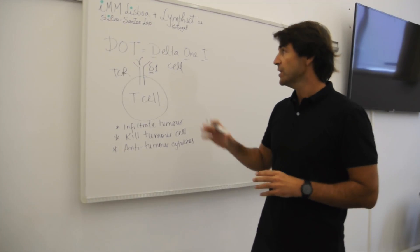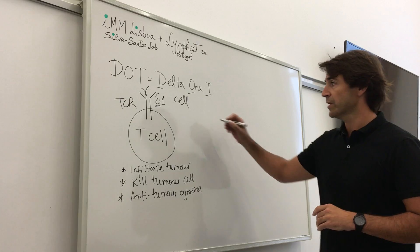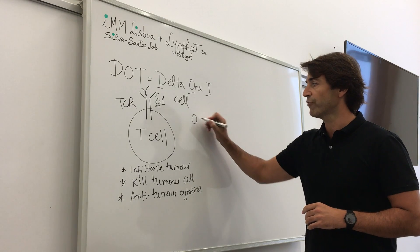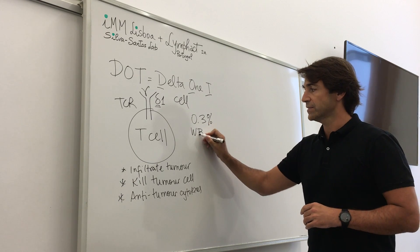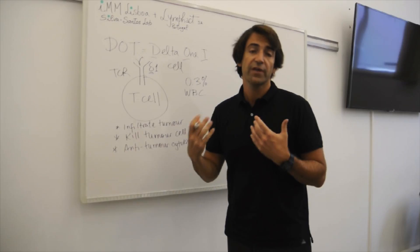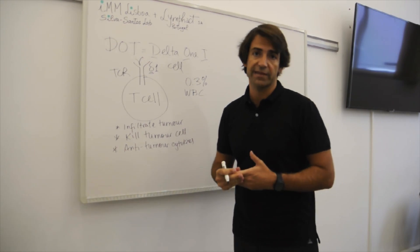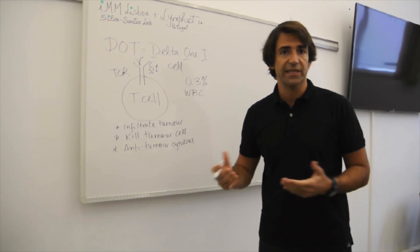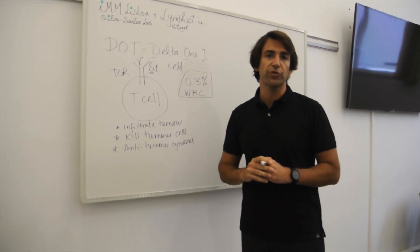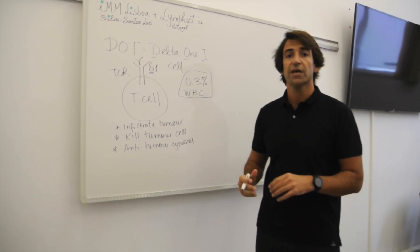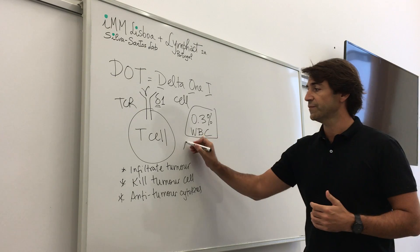But there was a major problem in using these cells for immunotherapy, which is Delta 1 T cells are only 0.3% of our white blood cells in circulation, both in healthy donors and cancer patients. So a major problem to use these cells in immunotherapy would be to have enough cells to do what we call adoptive cell therapy.